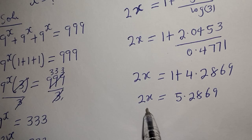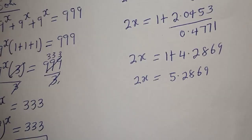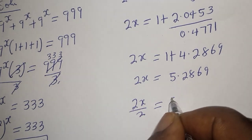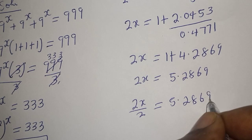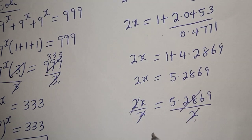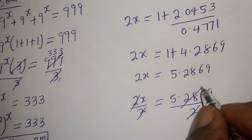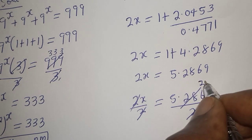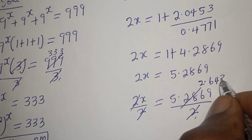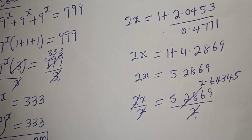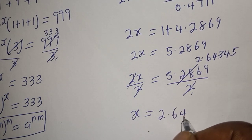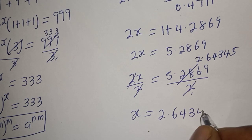We are looking for the value of s, so let's divide both sides by 2. 2s over 2 equals 5.2869 divided by 2. The 2s cancel, giving s equal to 2.64345. Therefore s is equal to 2.64345.